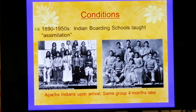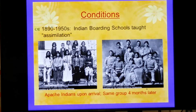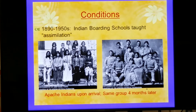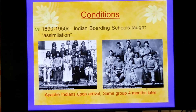Boarding schools: between 1890 and the 1950s, Indian boarding schools taught assimilation — basically giving up your culture to fit into another. This was forced assimilation. Here's the same group of Apache Indians. They would take these kids away from their parents, move them across the country to a boarding school, cut their hair, change their names, force them to speak English. They couldn't speak Apache anymore, couldn't dance or do cultural routines. You had to act like a white American. That's what these boarding schools did.